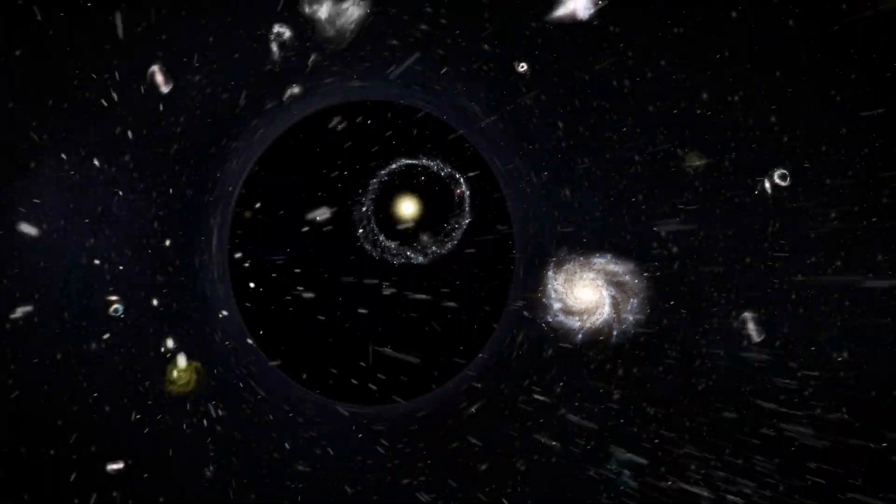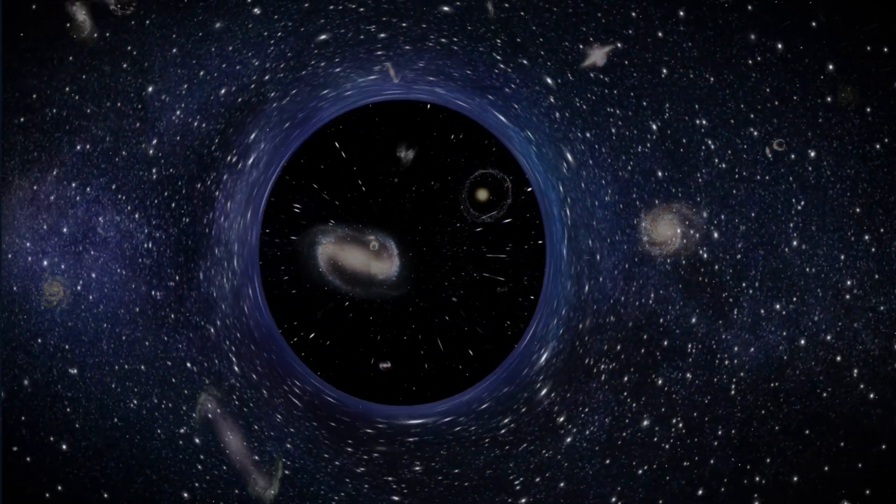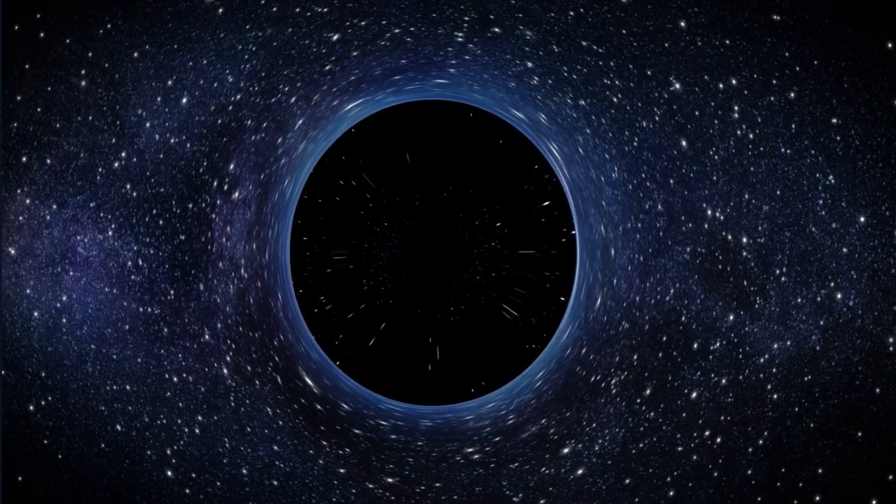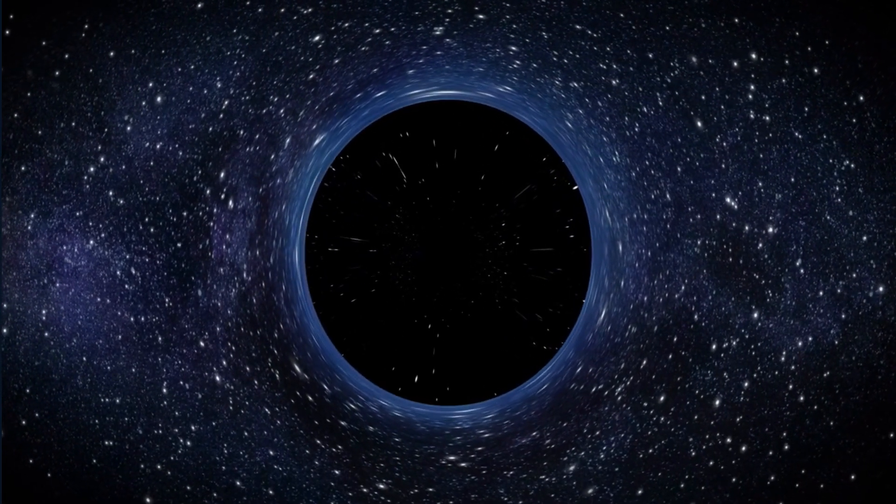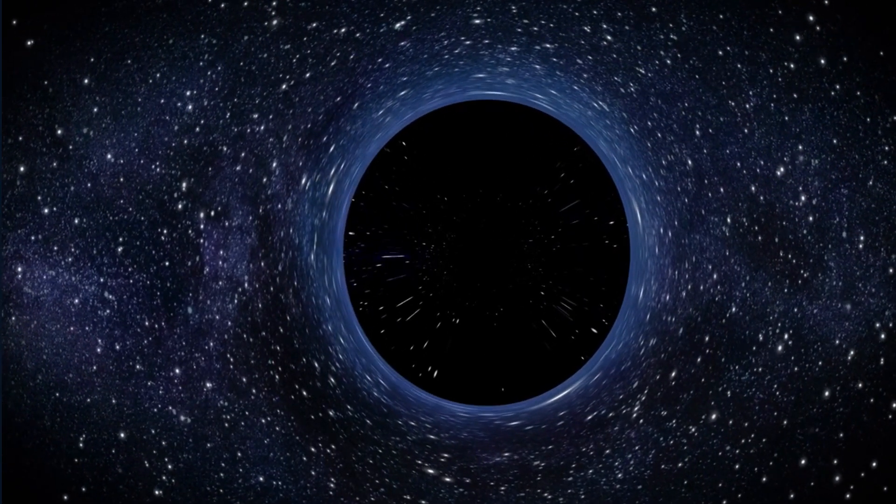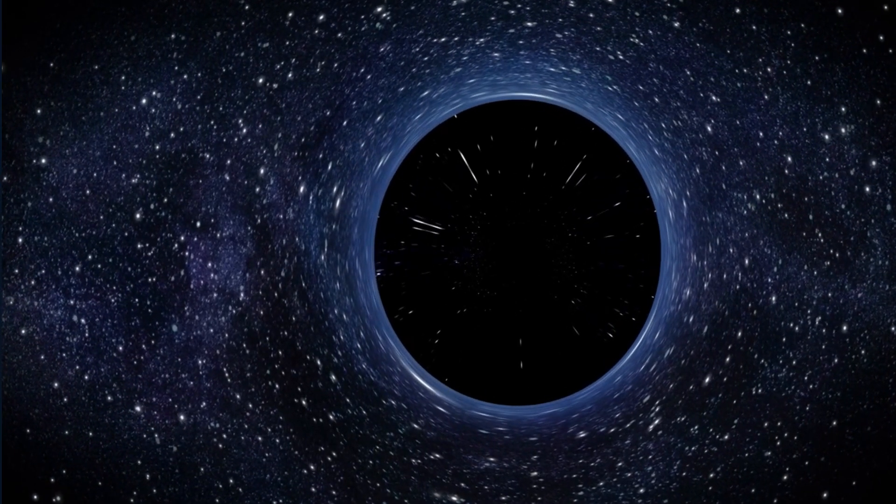Is it possible that our universe is the event horizon of a black hole in another universe? Well, here's the thing: our universe is three-dimensional, black holes have two-dimensional event horizons. That means our universe had to be born from a four-dimensional black hole in a four-dimensional universe in order to be an event horizon. Isn't that crazy?